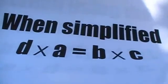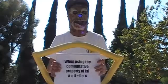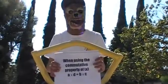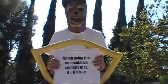And if you use the commutative property of multiplication — of course, because there are variables — that is A times D equals B times C.